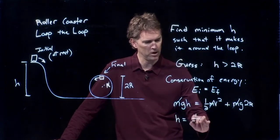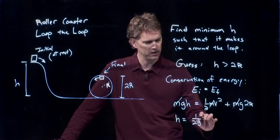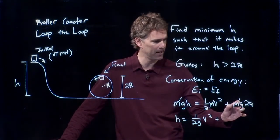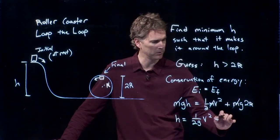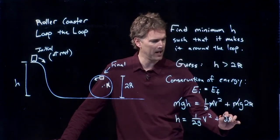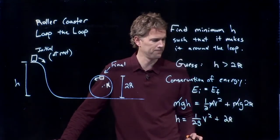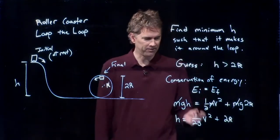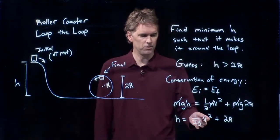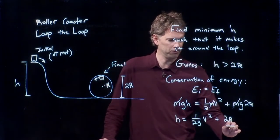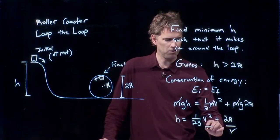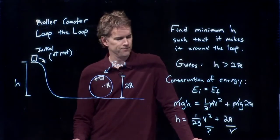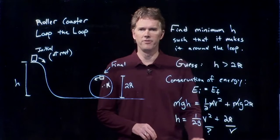And now I get h equals, I'm going to divide by g. So I get one over 2g times v squared, plus, when I divide out the g there, that goes away, I have to add 2r. So that looks pretty good, except we don't know this, right? We're given this, but this guy right here, we don't know yet. How are we going to get v?